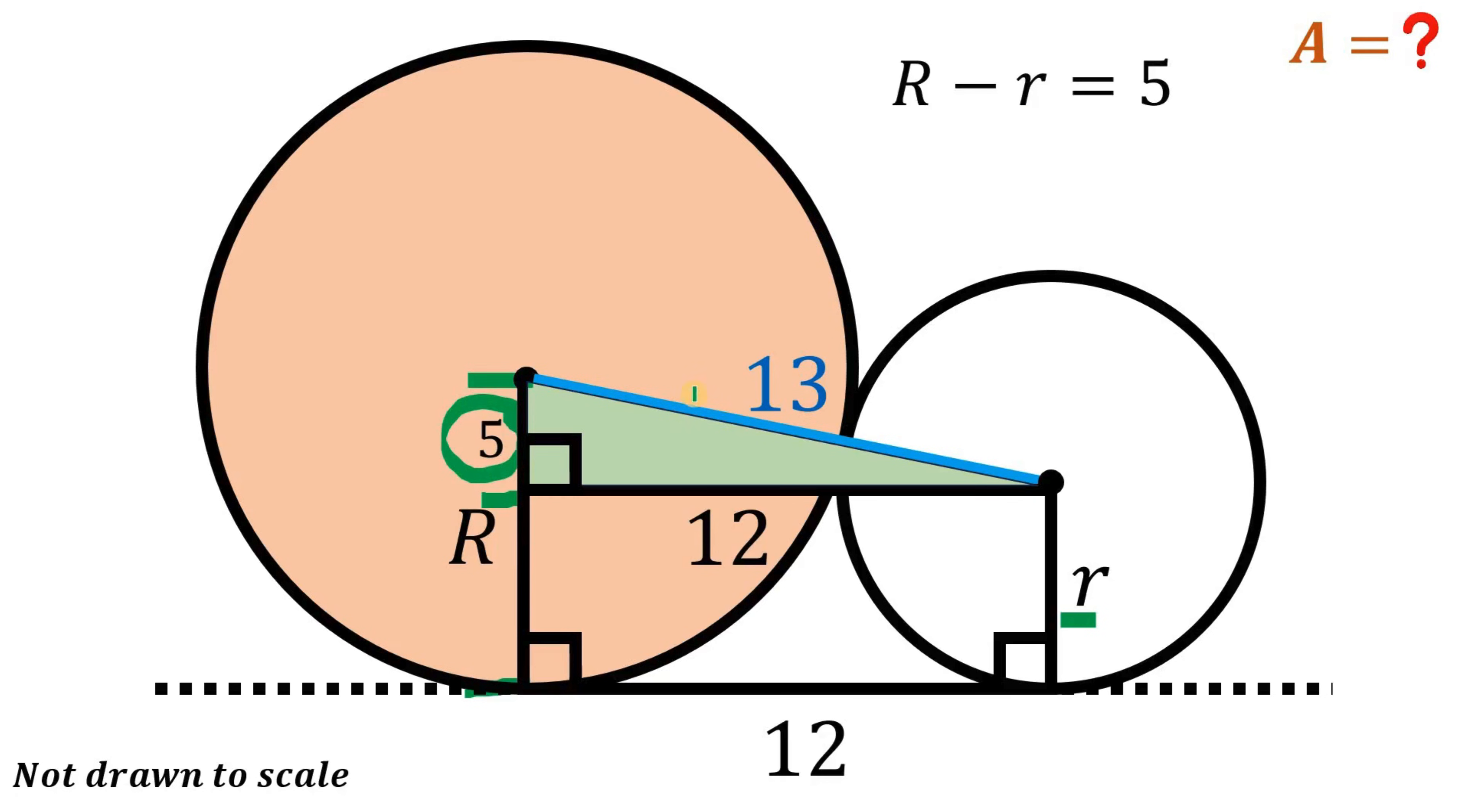Now another equation. Take note that this is the radius of the big circle and this is the radius of the small circle. So we can say that when we add the radius of the big circle and the small circle, this is equivalent to 13. So capital R plus small r equals 13.